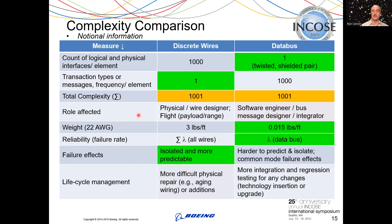It turns out complexity is determined by your role. If you're the configuration manager or physical wire designer worrying about payload and range, you may think a thousand discrete wires is not a good solution — stuffing all those wires into a platform is a much bigger physical task, so from that perspective a thousand wires is more complex. On the other hand, if you're the software engineer or bus integrator, putting a thousand messages on a twisted shielded pair is a much more complex job — so the data bus looks more complex to you. Complexity depends on the role.